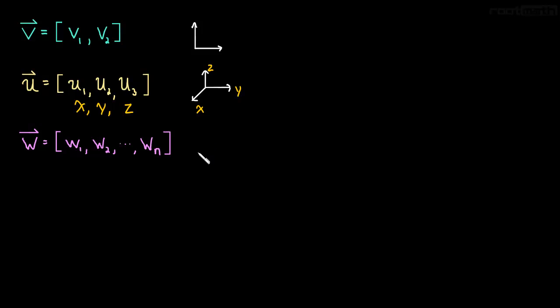When we go to higher dimensions, dimensions greater than three, we have a vector w with n dimensions. Let's say, for example, that n is four. So this vector has four components.